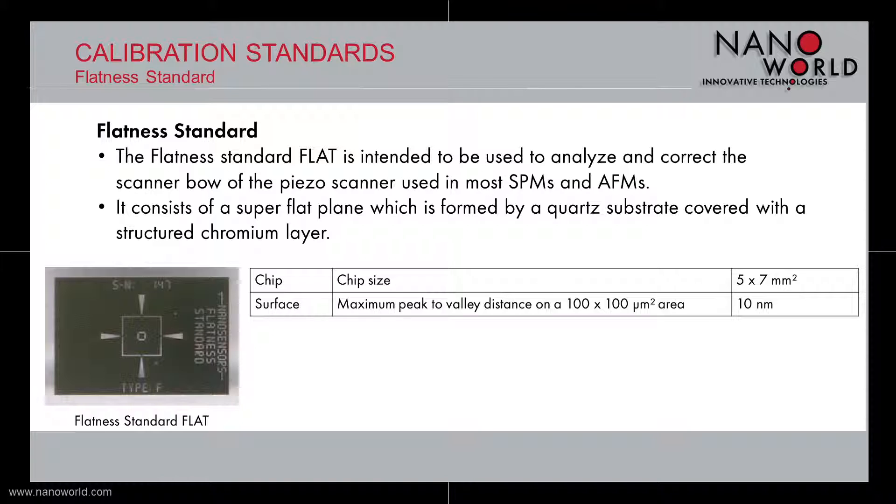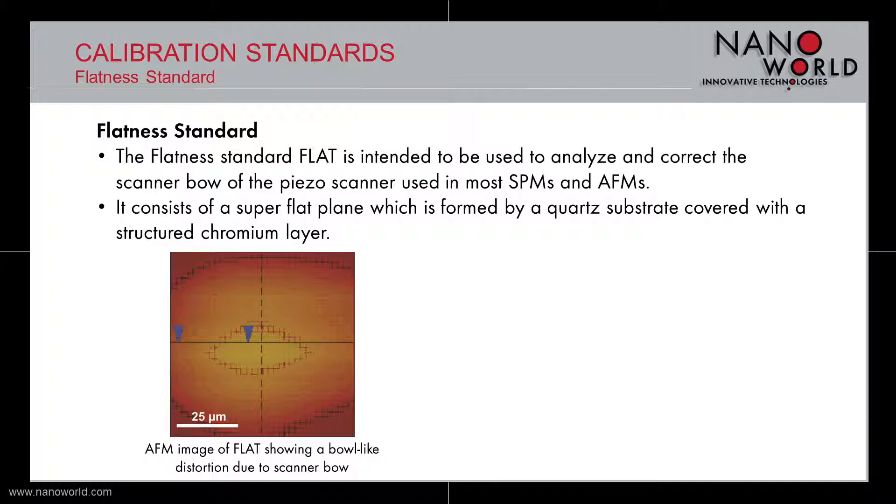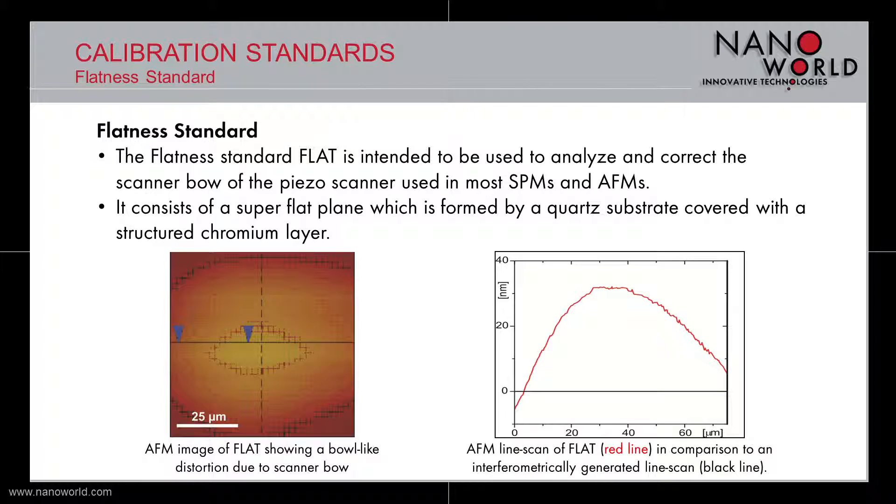The maximum peak-to-valley distance on a 100x100 μm² area is 10 nm. On bottom left you can see an AFM image of the FLAT calibration standard showing a bow-like distortion due to the scanner bow.